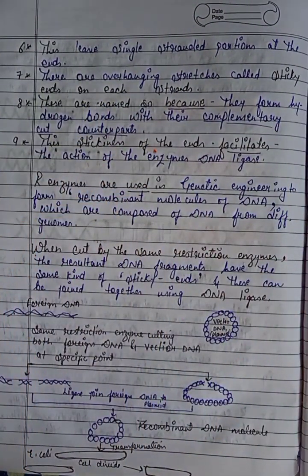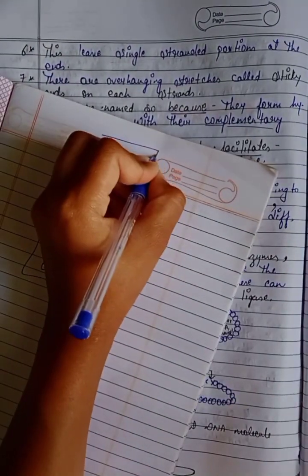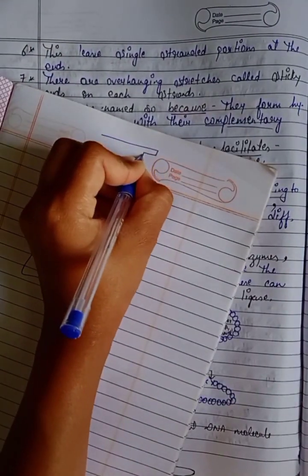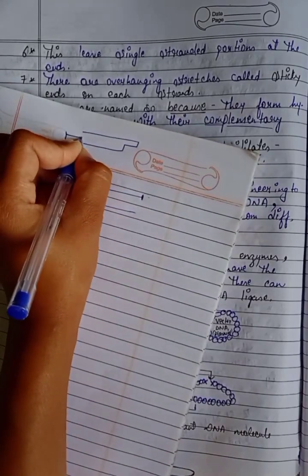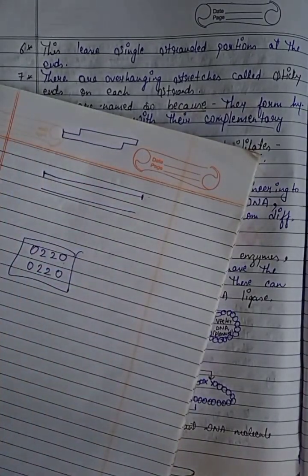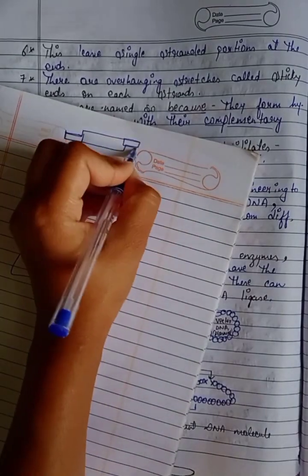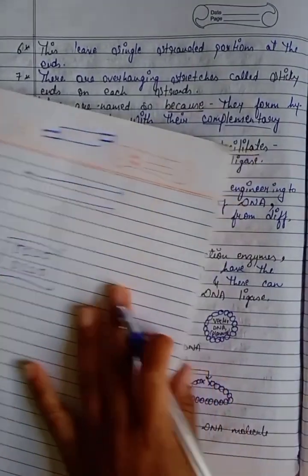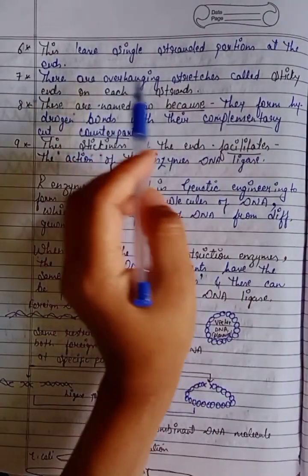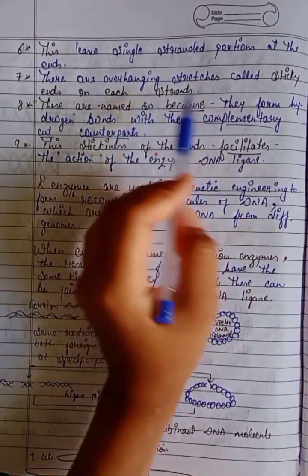This leaves single-stranded portions at the ends. We get to see this type of structure where a portion remains as a single-stranded overhang. These overhanging stretches are called sticky ends on each strand.